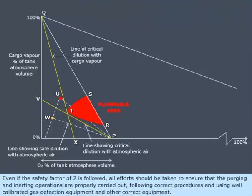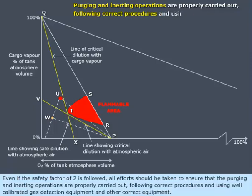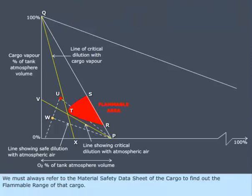Even if the safety factor of 2 is followed, all efforts should be taken to ensure that the purging and inerting operations are properly carried out, following correct procedures and using well-calibrated gas detection equipment and other correct equipment. We must always refer to the material safety datasheet of the cargo to find out the flammable range of that cargo.